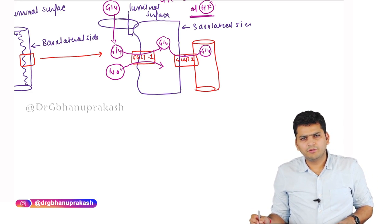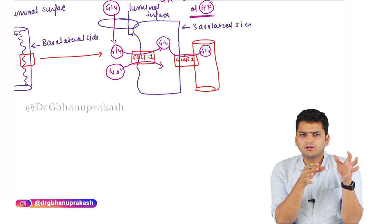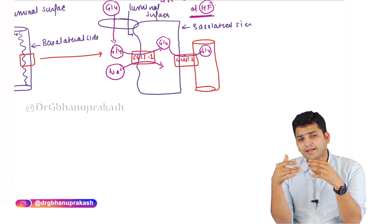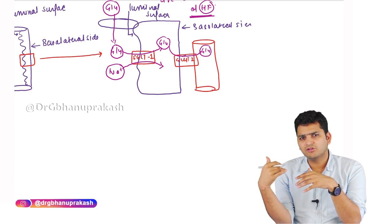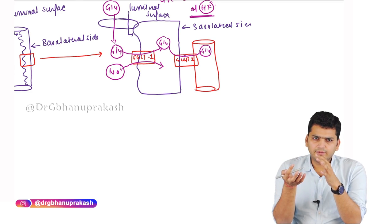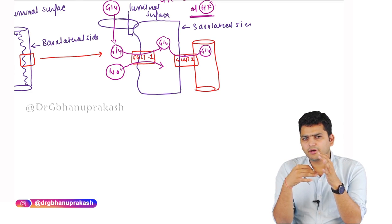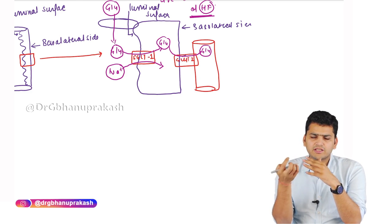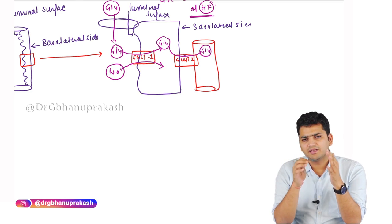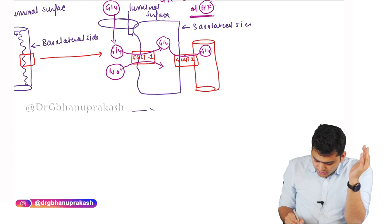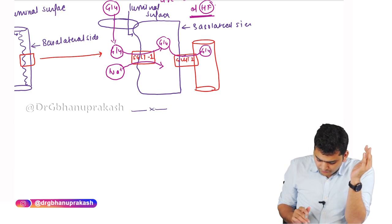To summarize the glucose transporters: the insulin sensitive ones include GLUT 4, GLUT 8, and GLUT 1 (also insulin sensitive). For the SGLT part, the key point is that SGLT2 inhibitors — the gliflozins — are used in both diabetes and heart failure management.